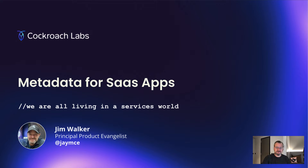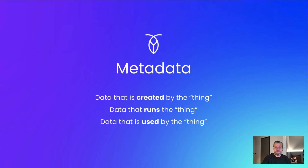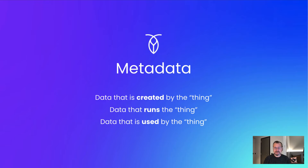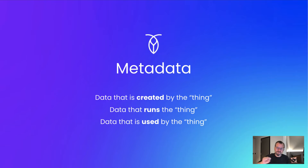Let's start by talking about metadata. I think about three types of metadata at a high level: data that is created by the thing, data that runs the thing, and data that is used by the thing. I like to break it down into the things that it runs and uses, and the things that it's created.